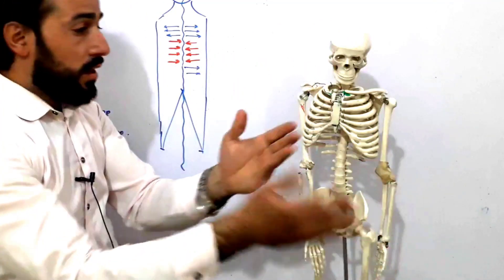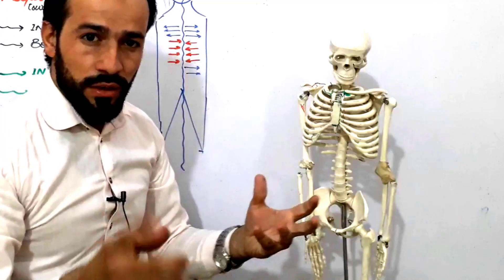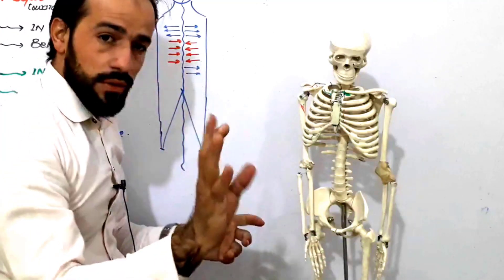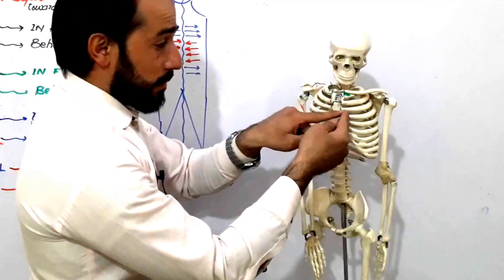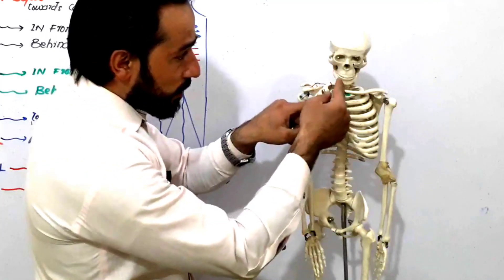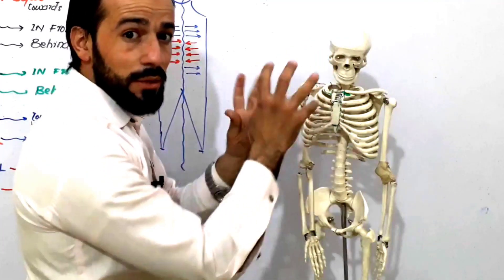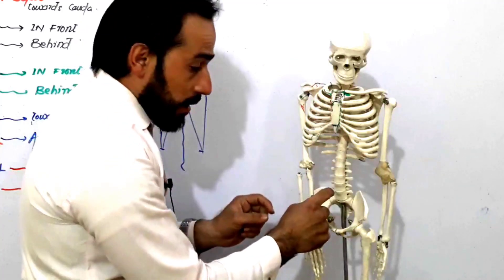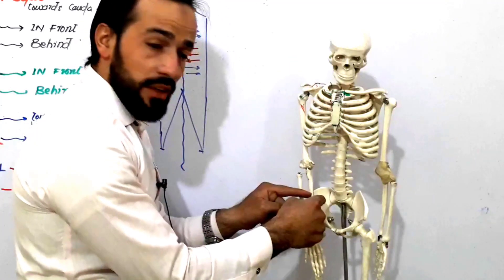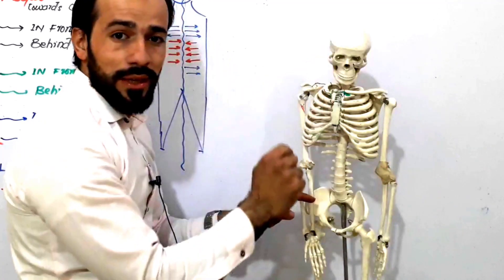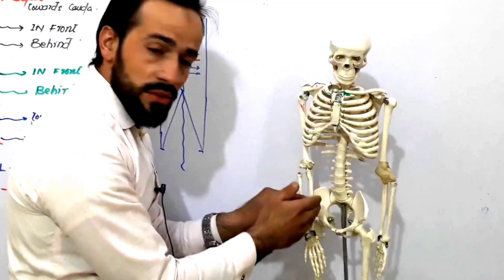So distal means away and proximal means near. Look carefully — my heart is proximal to my head because proximal means near. But my cecum is distal to my head, because distal means away.